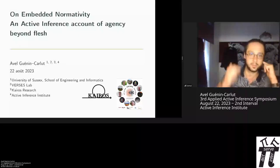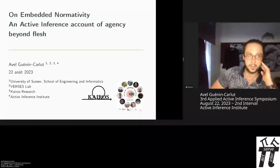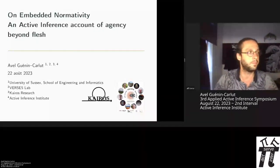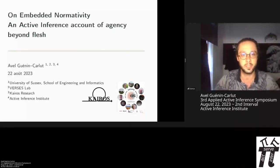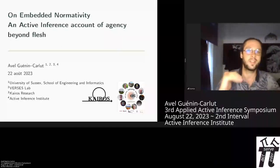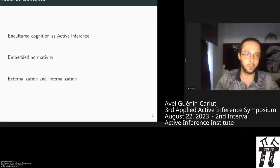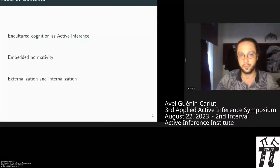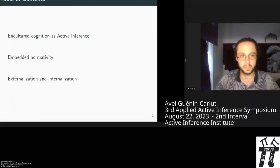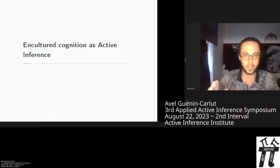This specific work was written in the context of my PhD, which is funded by the ESCAPE project — a project in cognitive archaeology. I'm interested in how culture and the archaeological landscape shape cognition and vice versa. The title is 'On Embedded Normativity: An Active Inference Account of Agency.' We'll go through existing work on culture and cognition in active inference, then expose the concept of embedded normativity, and then look at the semiotic question around the externalization and internalization of normativity in cultural landscapes.